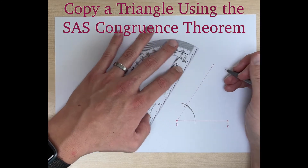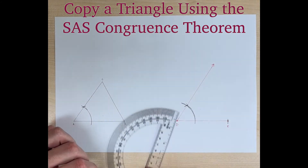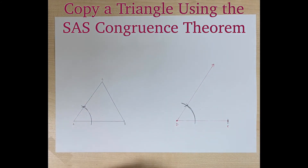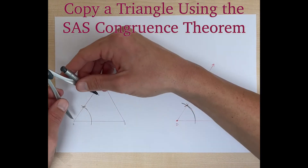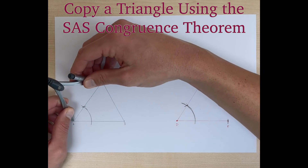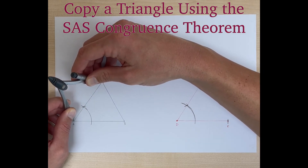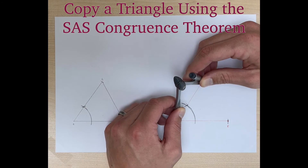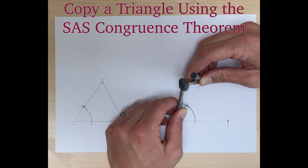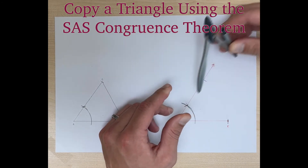We're going to draw this line kind of long so that we have room to measure the length of side AC. Now we're going to put the needle on A and measure the last side of our triangle, put our arc there, keep our compass open the same amount, put the needle on D, and put our arc up here on the line we just created.